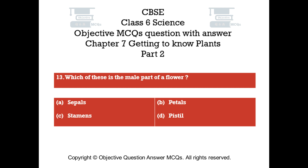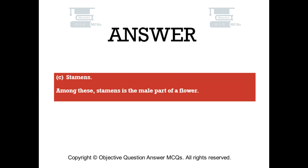Question number thirteen. Which of these is the male part of a flower? Option A sepals. Option B petals. Option C stamens. Option D pistil. The right answer is option C — stamens. Stamens are the male part of a flower.